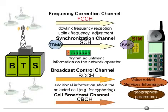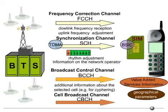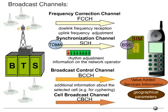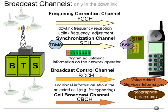The FCCH, SCH, BCCH, and CBCH are broadcast channels and exist only in the downlink. They are the first logical channels belonging to the common channels.